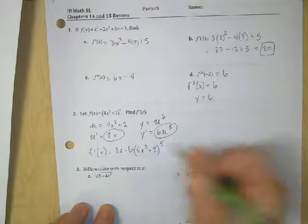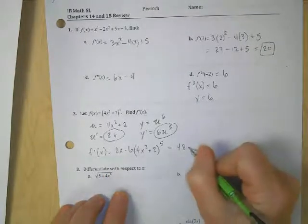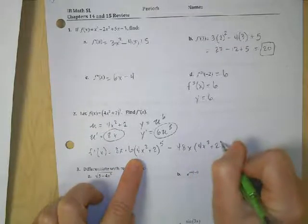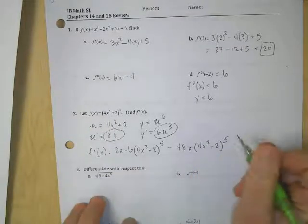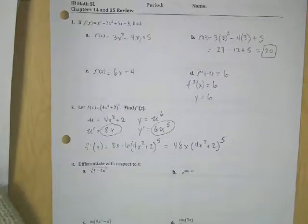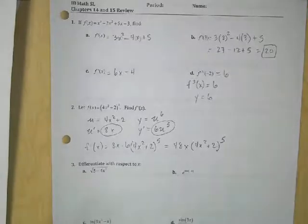Now I can simplify that a little bit. 8 times 6 is 48. So 48x times 4x squared plus 2 to the 5th power. Okay. I just realized on my other answer key I made a mistake. Okay. So that's that.